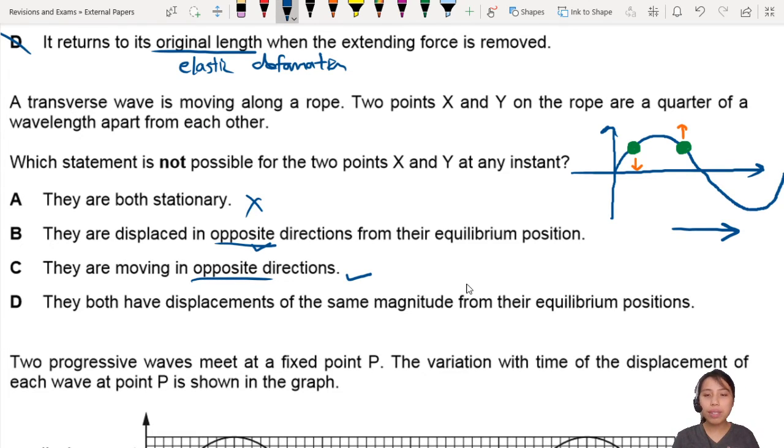D - They have displacements of the same magnitude from equilibrium. There, we just had it. They are both at the same magnitude from equilibrium. From equilibrium you draw a line up, from equilibrium you draw a line up. It's totally possible to have them at the same displacements.